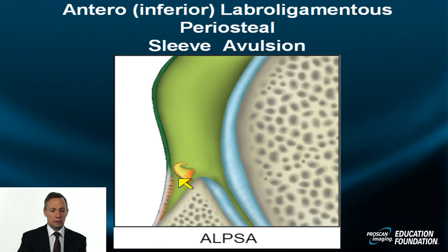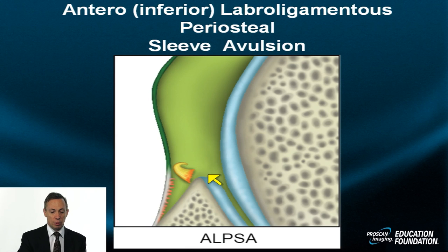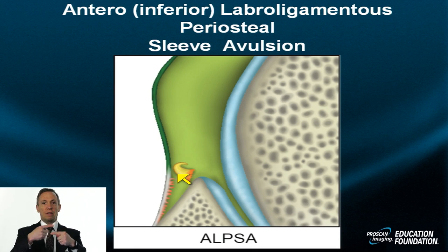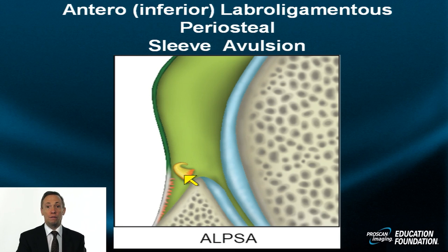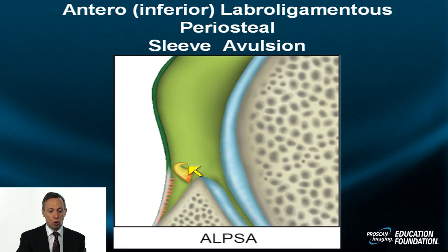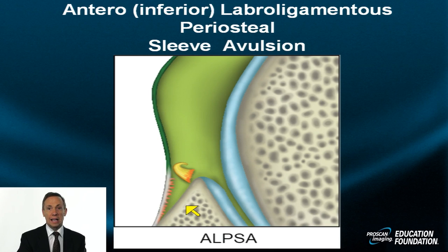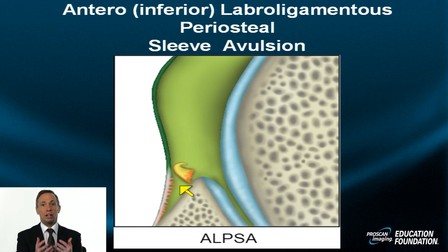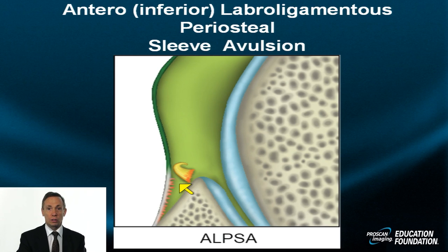The ALPSA lesion — anterior labral ligamentous periosteal sleeve avulsion — involves not only labral separation from the glenoid but the labrum also rolls medially and often inferiorly, like turning the top of a can of anchovies. When inferiorly displaced, it disappears in the axial view and is only seen coronally. It rolls up underneath the elevated periosteal sleeve, which maintains its continuity but is separated from the underlying glenoid. There is great variation in how far medially and inferiorly it displaces.